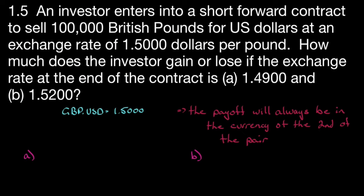An investor enters into a short forward contract to sell 100,000 British Pounds for US dollars at an exchange rate of 1.5000 dollars per pound. How much does the investor gain or lose if the exchange rate at the end of the contract is (a) 1.4900 and (b) 1.5200? So the investor entered into a short forward contract. The quote we're given, 1.50, if we're looking at it in terms of a currency quote, it would be written like this.